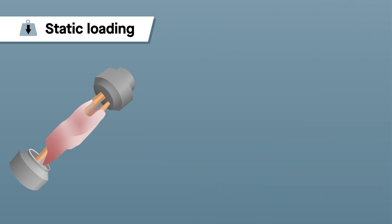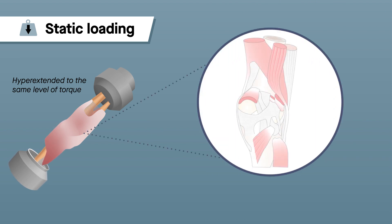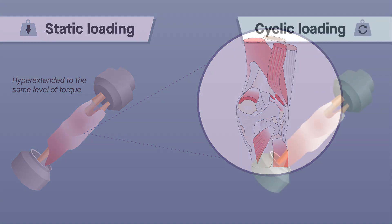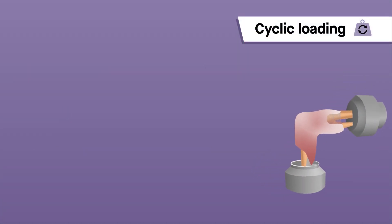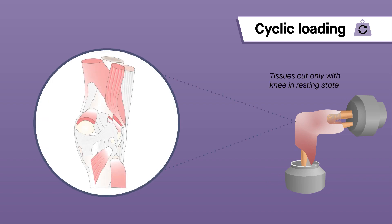In the static loading method, knees were hyperextended to the same level of torque. Selected soft tissue structures were then cut from the knees in sequence, with the resulting loss in restraining moment representing the function of each structure in resisting hyperextension. In the cyclic loading method, the setup was the same, except that tissues were cut only after bringing the knee to its resting state. This allowed researchers to capture any possible stress relaxation that tissues in the knee may undergo.